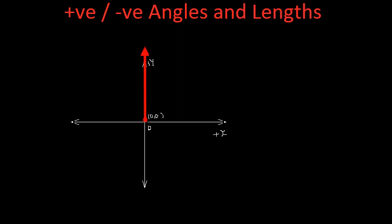This is plus y and any distance measured from this origin in the opposite direction, that means in this direction, is referred as minus y and the distance measured in this direction, the opposite direction of positive x, is referred as minus x.